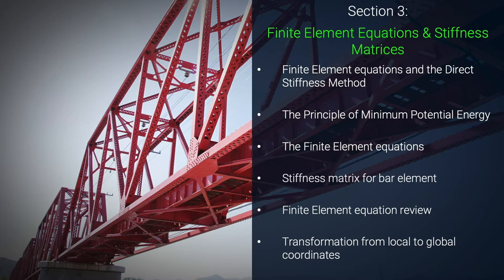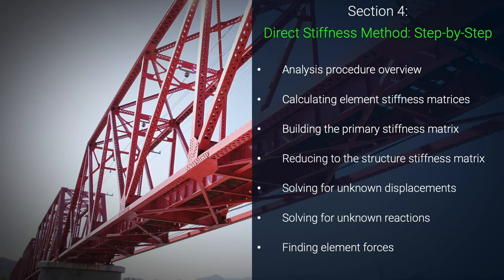Up to this point we've been focusing on getting a rock solid understanding of underlying elastic theory. Now we can shift gears and put this knowledge to work within the direct stiffness method. In section four we'll walk our way step by step through the direct stiffness method analysis procedure, starting with a simple two bar truss so you can see the process in action on a very simple structure.